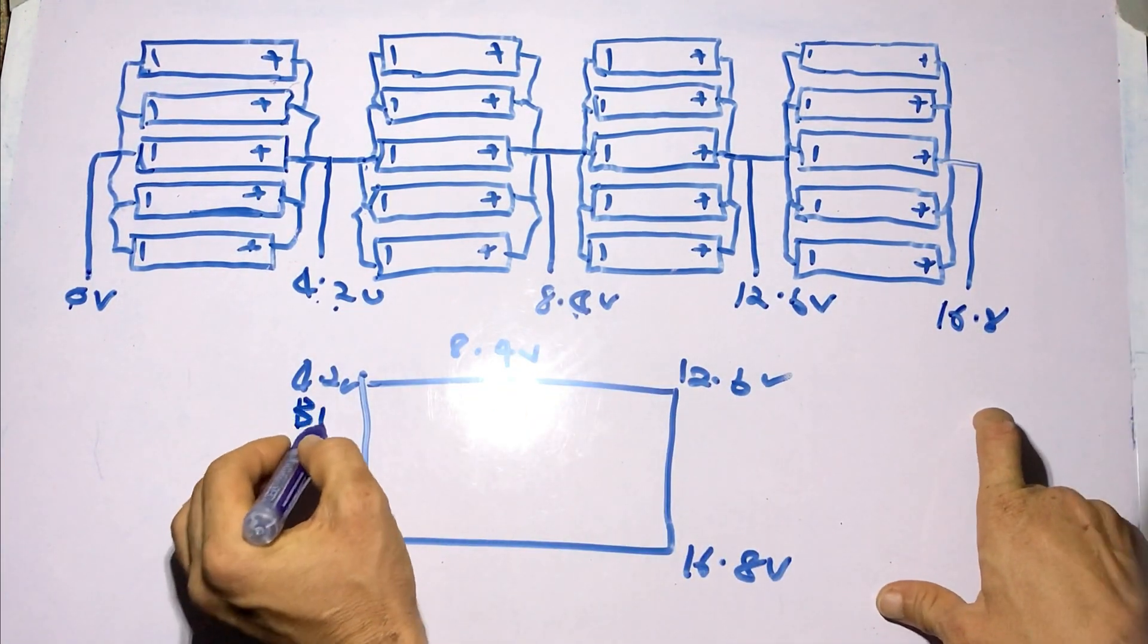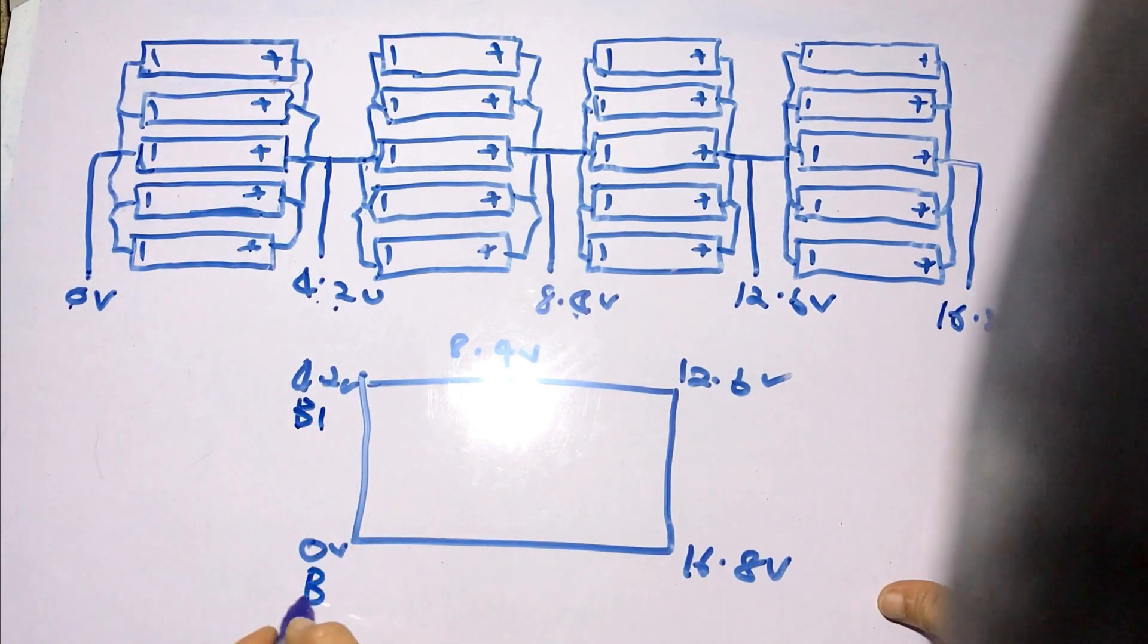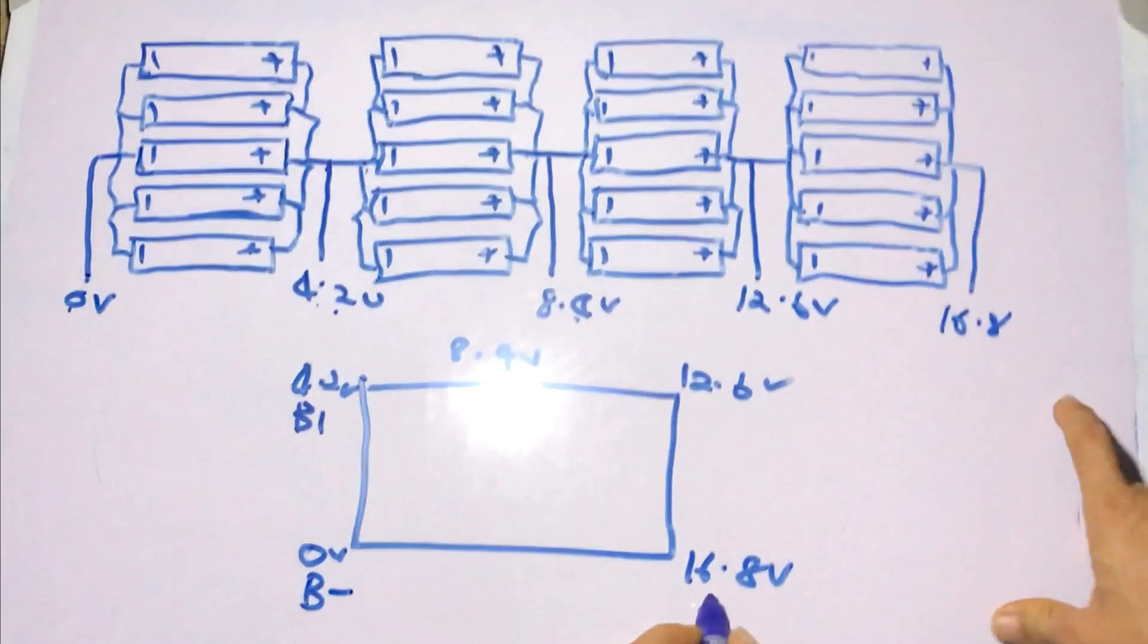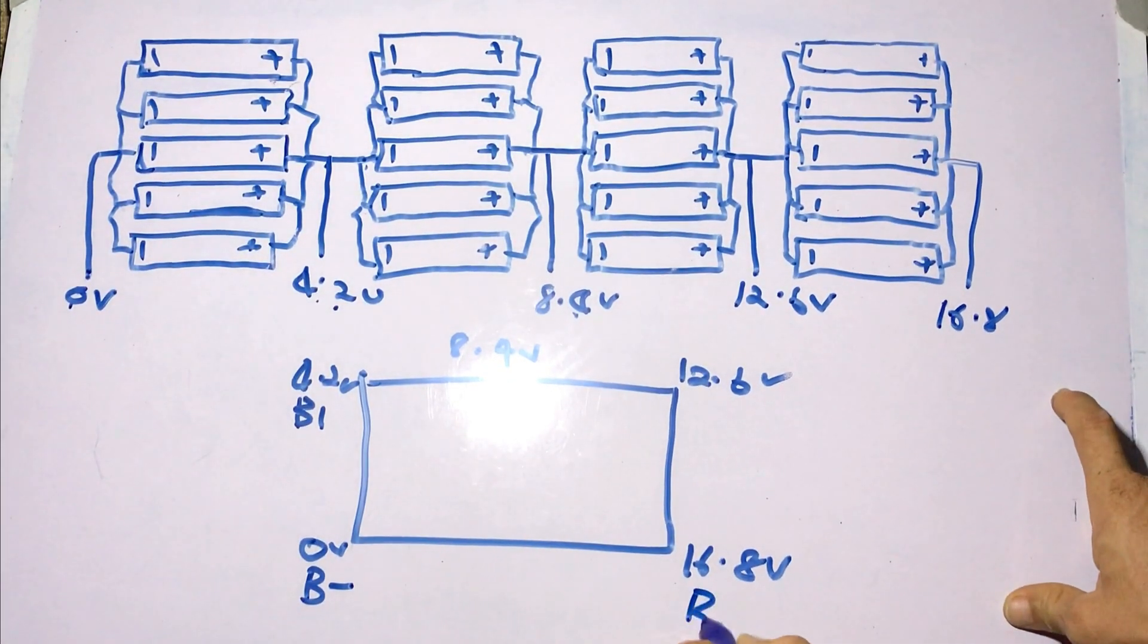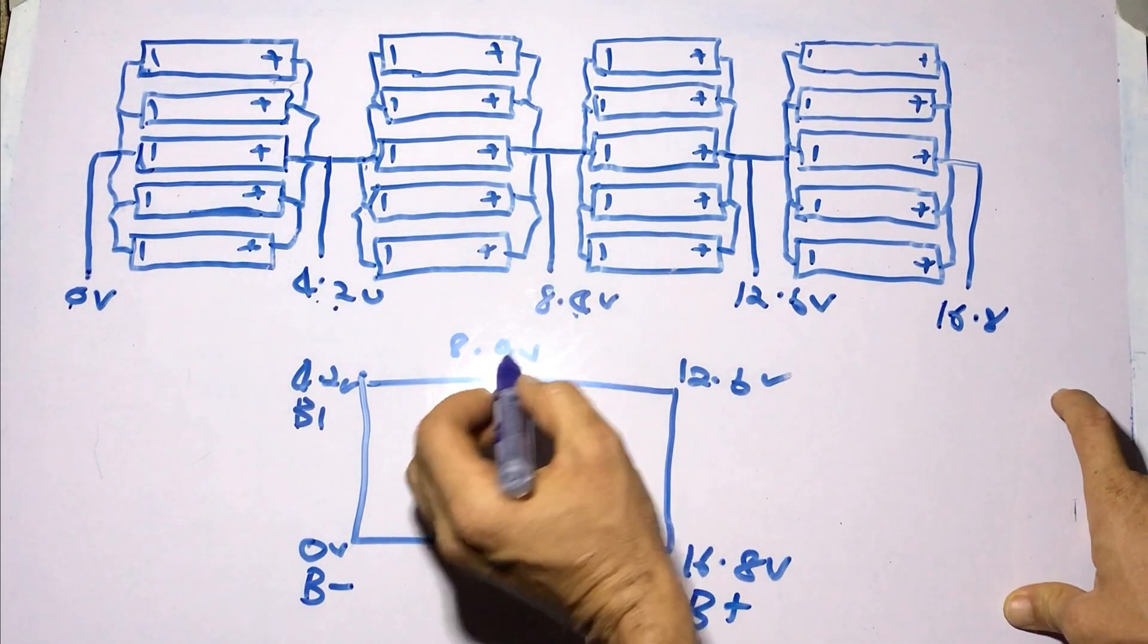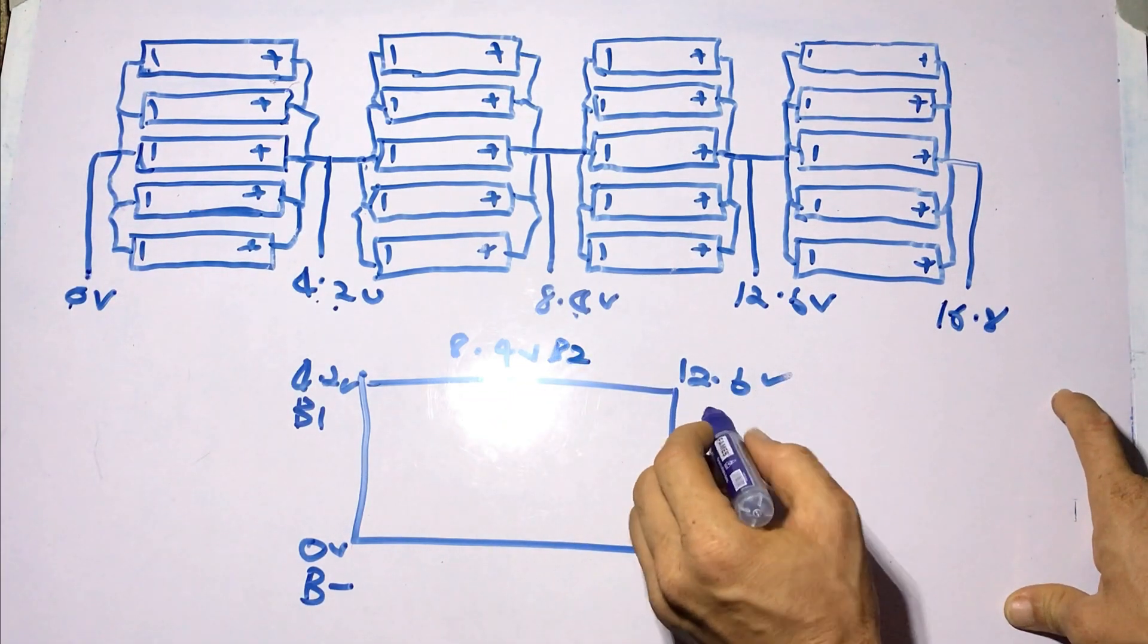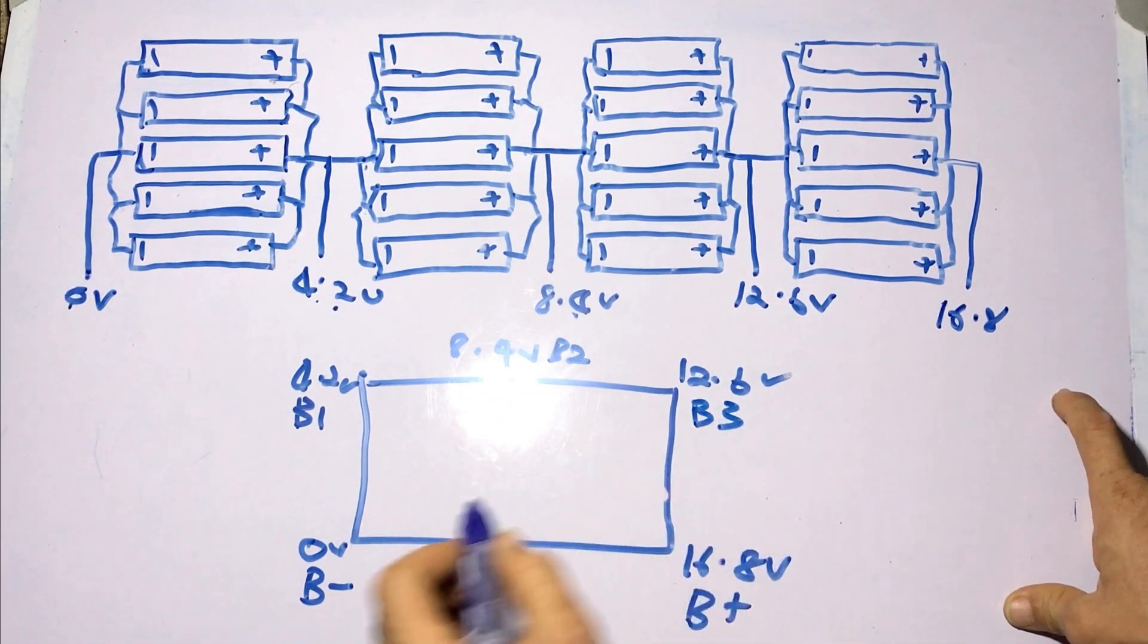You see B1, then you see the negative connection for the battery labeled B minus, and the positive labeled B plus, then 8.4 volts is labeled B2, then you have 12.6 volts being B3.